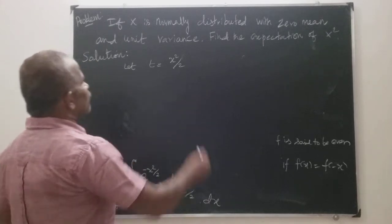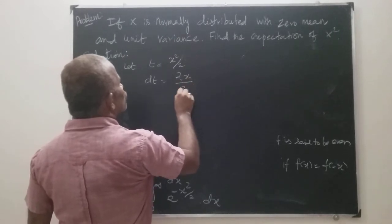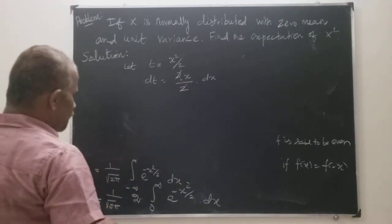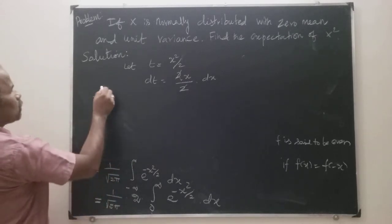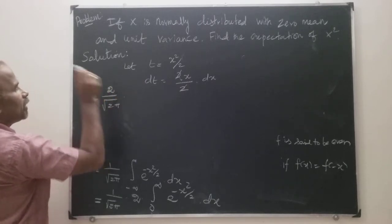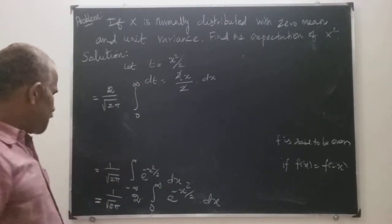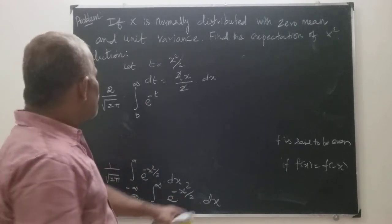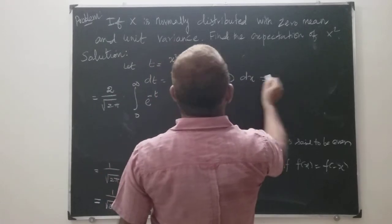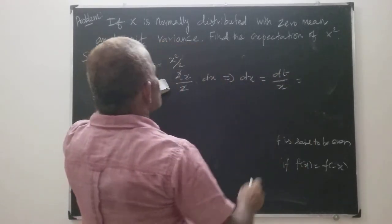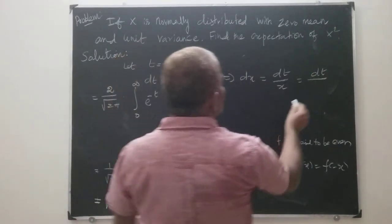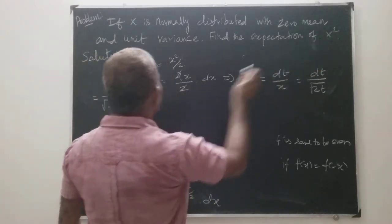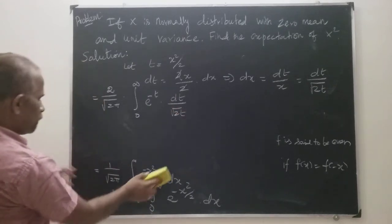Now let t = x squared by 2, so dt = x dx. Therefore dx = dt divided by x, where x = square root of 2t. So dx can be written as dt divided by square root of 2t.